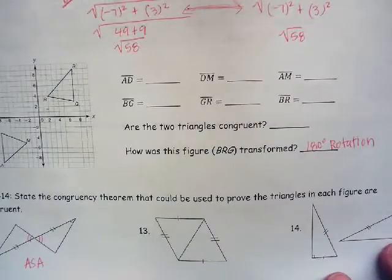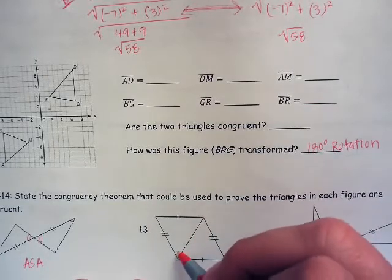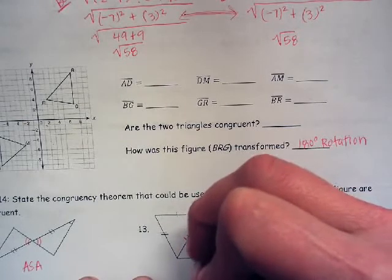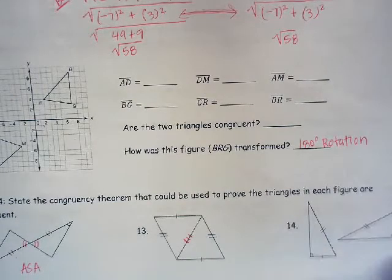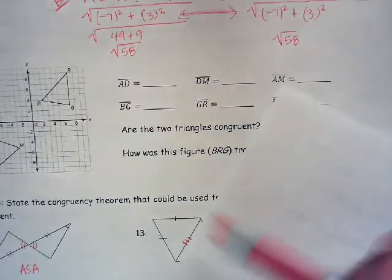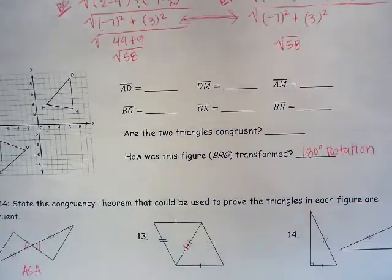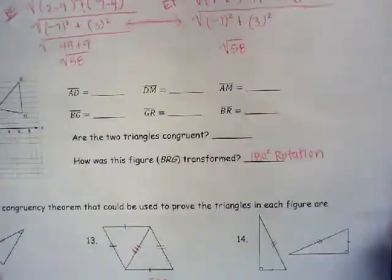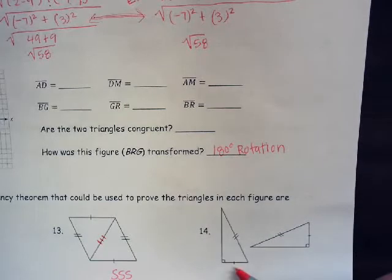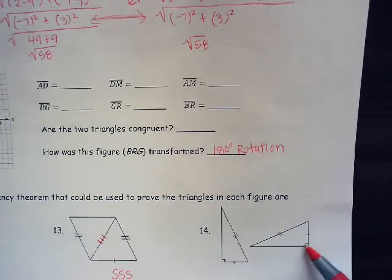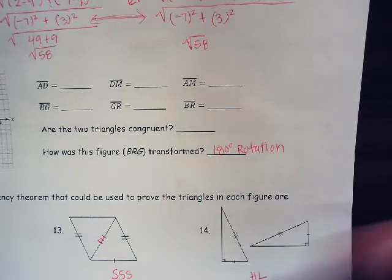Number 13: these triangles share a side, so if we were writing a proof, we'd use the reflexive property to say that side is congruent to itself. Starting in one triangle and moving to the other, we have side-side-side. So we use the SSS theorem. Number 14: this is a right triangle — both have a right angle here — then we have hypotenuse-leg. So this is congruent by the hypotenuse-leg theorem.